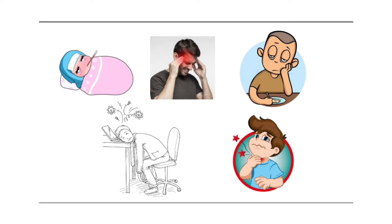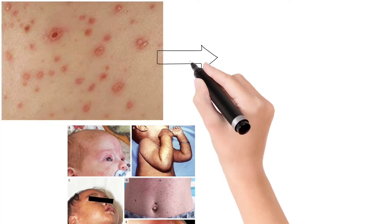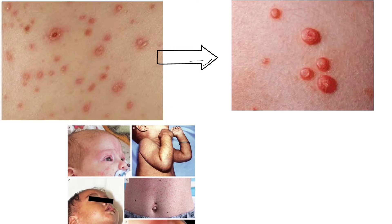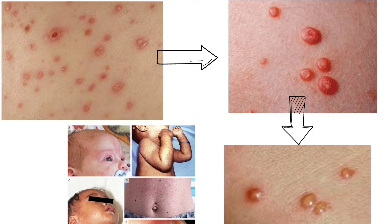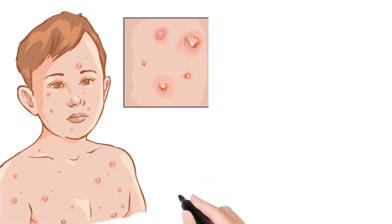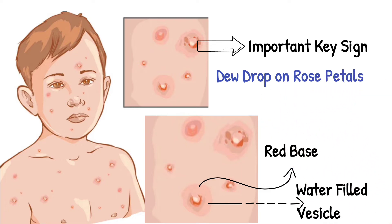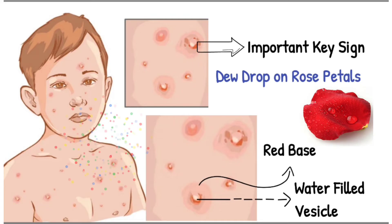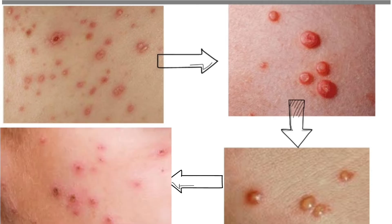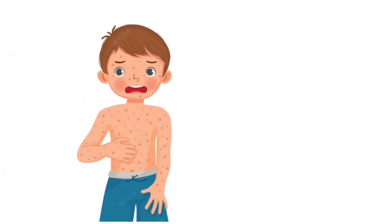After the appearance of these symptoms, small red dots called macules will be seen on the trunk, face, scalp, etc. Initially these macules transform into papules, which are slightly raised, and these papules later transform into vesicles. Vesicles are liquid-filled and are the characteristic feature of chickenpox. In medical terminology, we call it 'dew drop on rose petals' — on an erythematous red base, the vesicles appear like dew drops. After the vesicles, they transform into crusted macules or papules, meaning there will be crusted skin. Along with these symptoms, there will be severe itching.